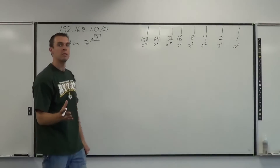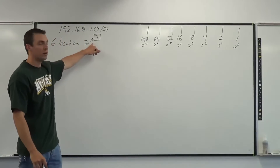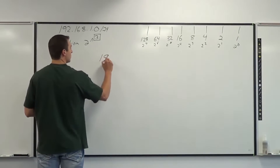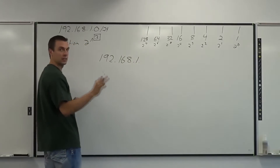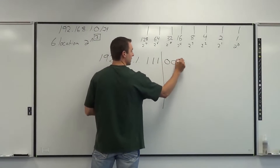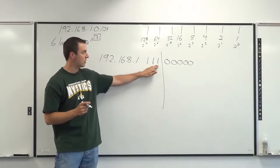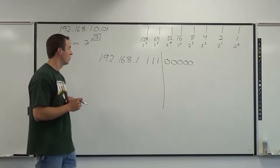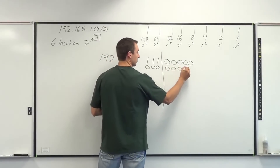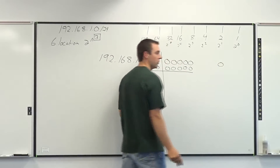Once you've figured out your power number, draw out your IP address with those bits borrowed: 192.168.1. — then three borrowed bits, draw your line, then bits four through eight. Underneath the line, make everything zeros. All zeros converts to zero, so your first network ID always starts with zero.